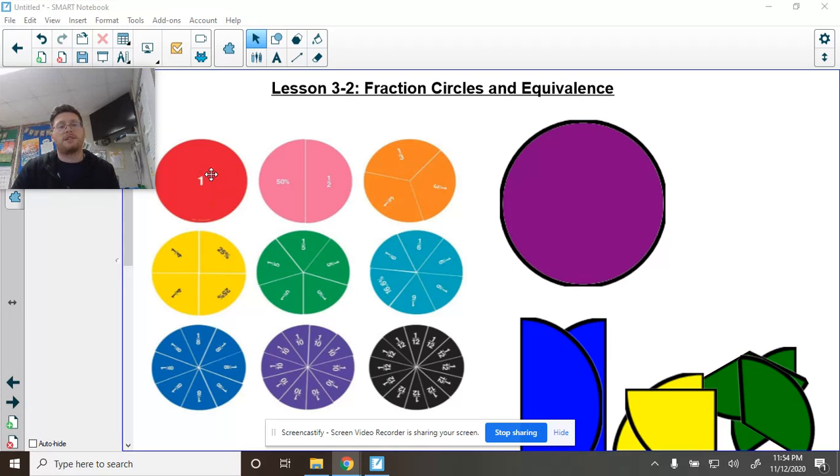So as we can see right here, we have a whole, a half, a third, a fourth, fifth, sixth, eighth, tenth, and twelfth. Those are all our common ones.